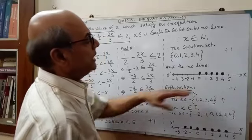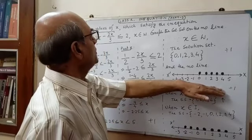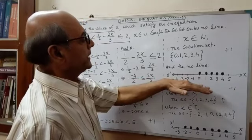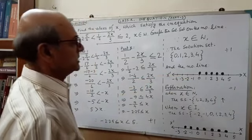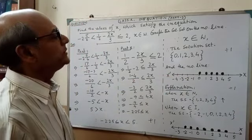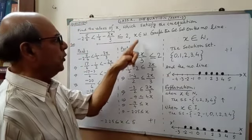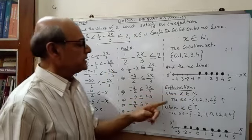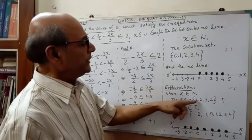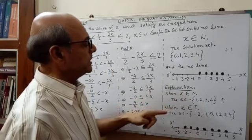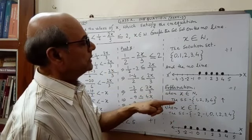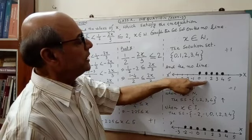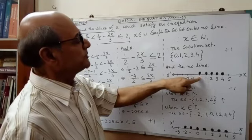Up to this is the solution of the question. If you do correctly, then you will get 3 marks. Another point: instead of whole number, if it is given natural number, in that case the solution set will be 1, 2, 3, 4 — because natural number starts from 1. After writing the solution set, you have to plot 1, 2, 3, 4 on the number line.